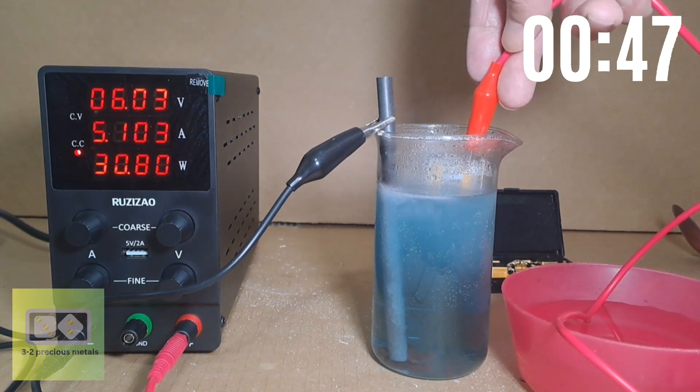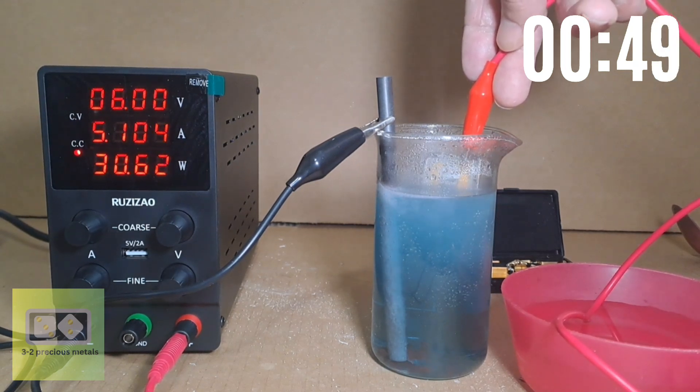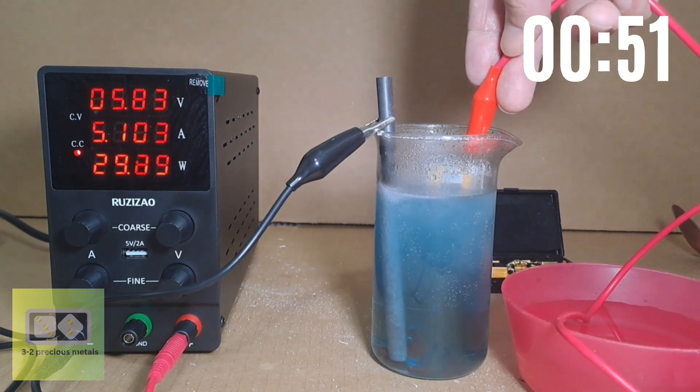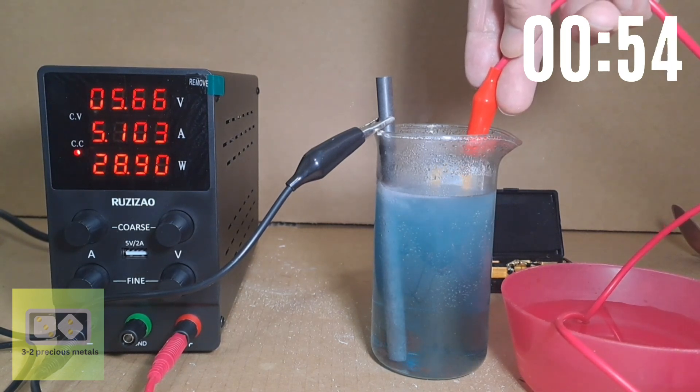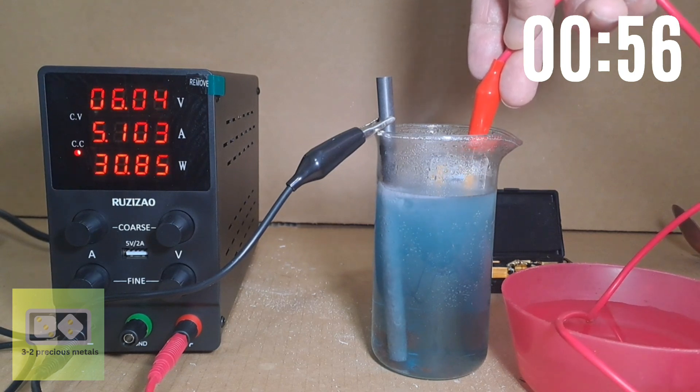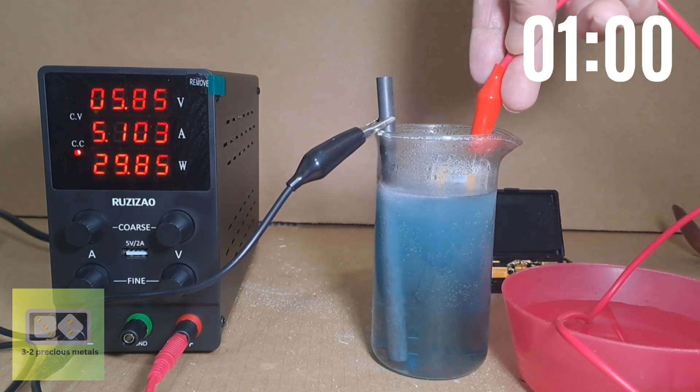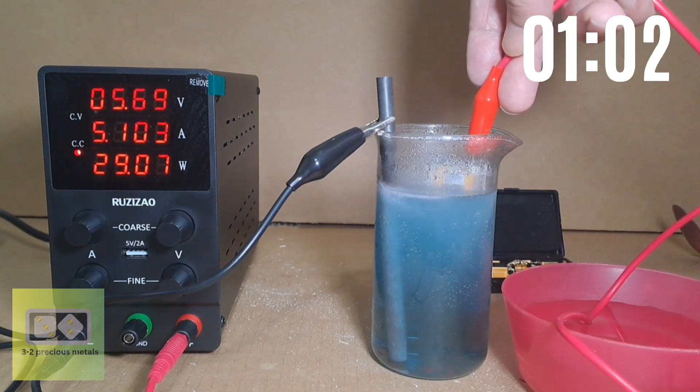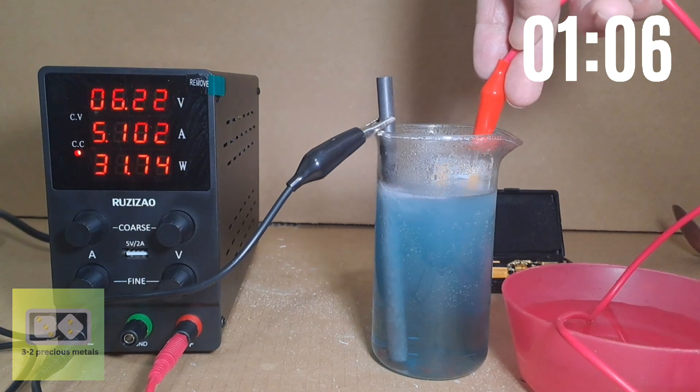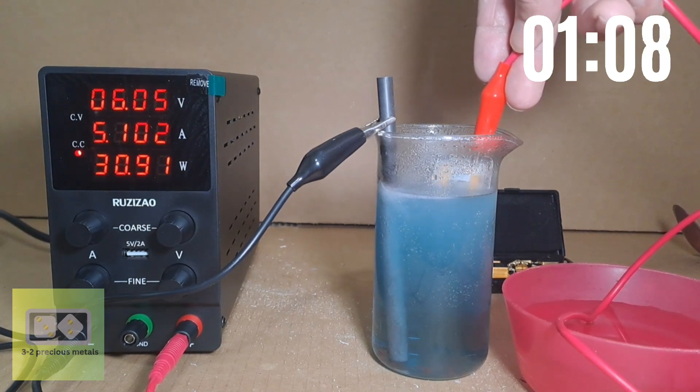For the electrolyte I have dissolved 80 grams of sodium bisulfate into 200 milliliters of distilled water. I also have a small bowl there of water with a teaspoon of sodium bicarbonate in it. This is to rinse the anode once it's done. This is used to neutralize the acid on the anode and prevent the acid from irritating my skin.